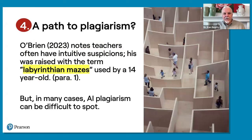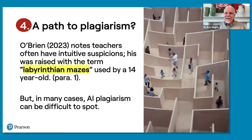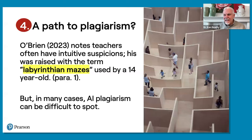The fourth issue is: is AI a path to plagiarism? This is a major one for teachers. We ask students to write essays and they say, 'No problem — ChatGPT, write an essay on any topic.' O'Brien notes teachers often have intuitive suspicions. One example used the phrase 'labyrinthian mazes' — that's not something a 14-year-old would say, so it was wrong. In many cases, AI plagiarism can be difficult to spot.